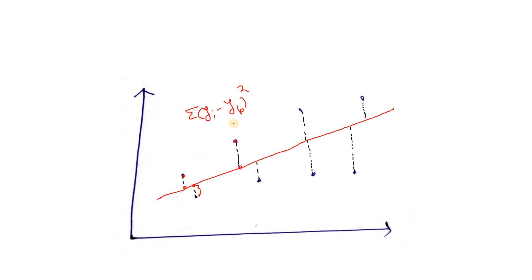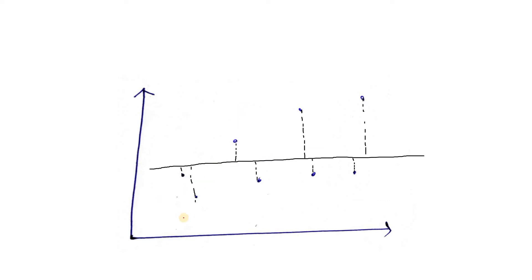Now, how do we compare whether the residual sum of squares is high or low? We need a standard. For that standard, we take a line which is the average of all the y data points — the mean line, y-bar. We then calculate the error of each actual y value with respect to this mean, square those errors, and sum them up. This gives the total sum of squares and serves as our reference standard for comparison.